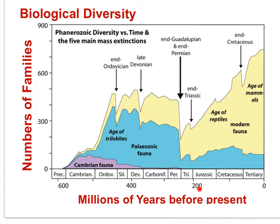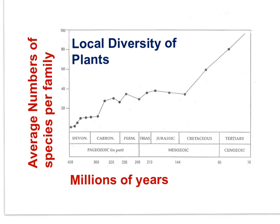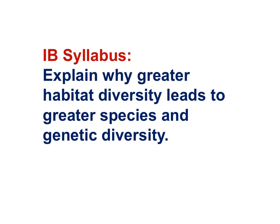Over great spans of time, the diversity of living things on Earth has increased, even despite five great extinction events. This graph shows the number of different species within families of plants, going back hundreds of millions of years. You can see that the diversity of life on Earth has generally increased.